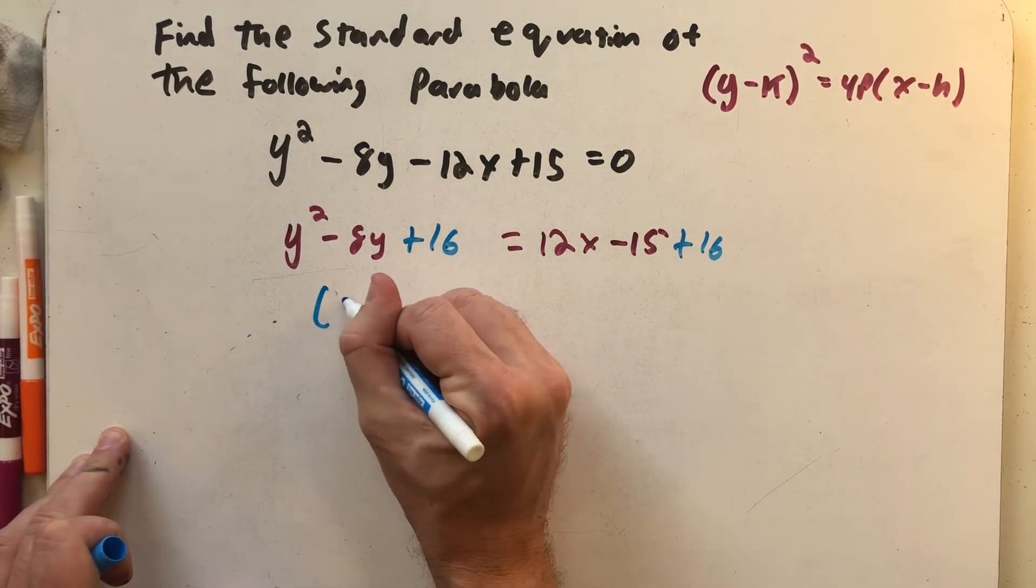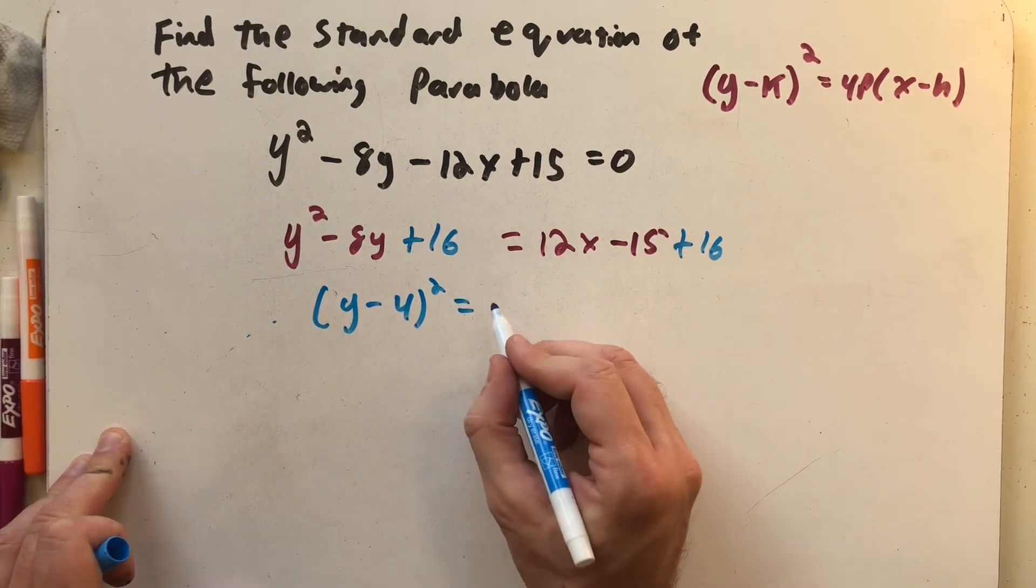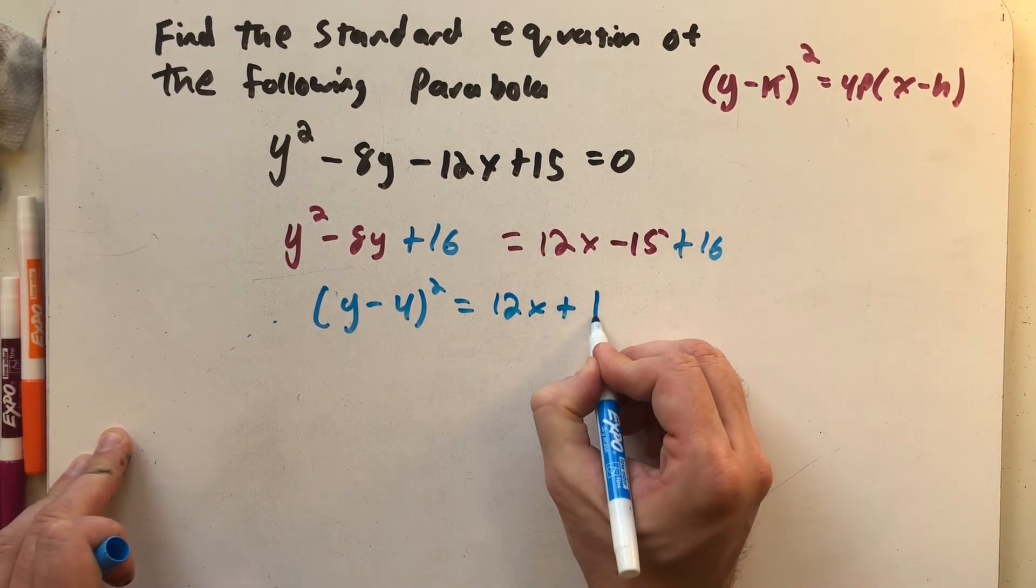This left-hand side factors into (y - 4)². And here I have 12x + 1.